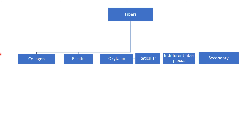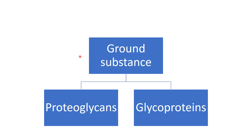Under fibers, we have different types. The first one is collagen fiber, then elastin, oxytelan, reticular, indifferent fiber plexus, and the secondary fiber groups. Next is the matrix in which all these cells and fibers are located, and that is called the ground substance.